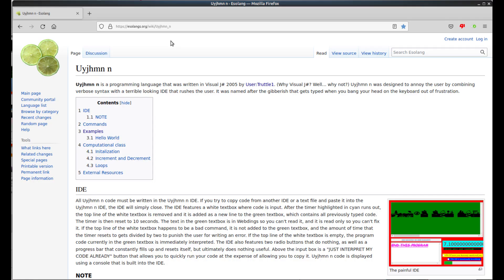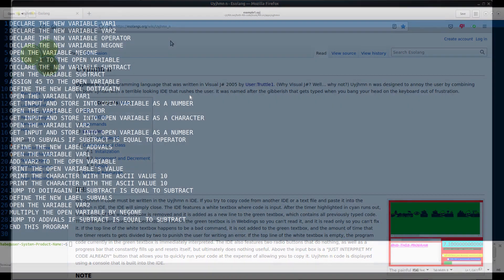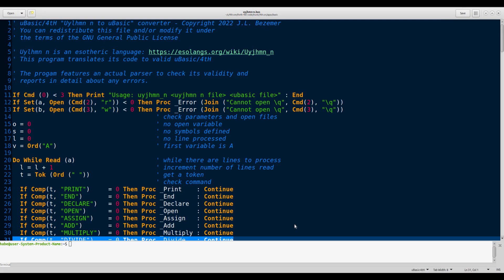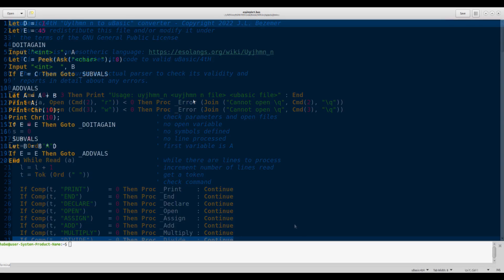This esoteric language with an unspeakable name has a strict but very simple syntax. Making a preprocessor for it took just less than 10k source code, or 230 lines. It converts its rather verbal language into simple uBasic.